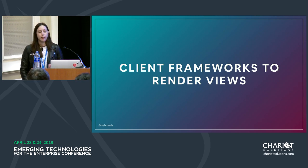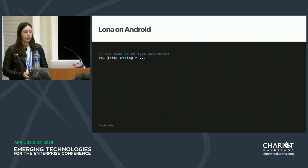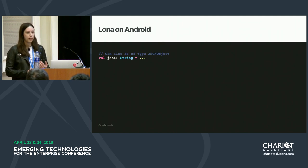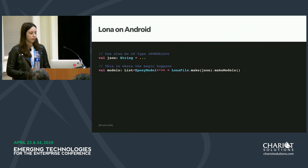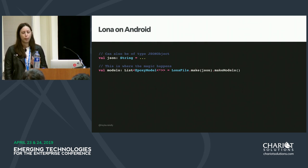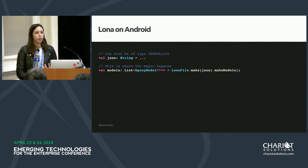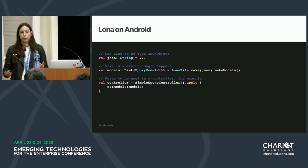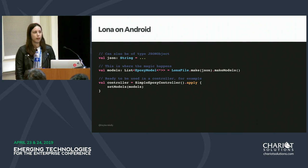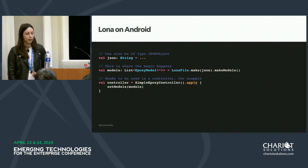Lona also offers client frameworks to render the views. On Android, you fetch the JSON API response, pass it into a function called `lonafile.make`, and call `makeModels` on it. This returns a list of Epoxy models — UI models for things to add to a screen — which are then added to the controller and rendered. That's all a developer has to do to get their Lona screen rendered: fetch the JSON, call makeModels, and add them to the builder.